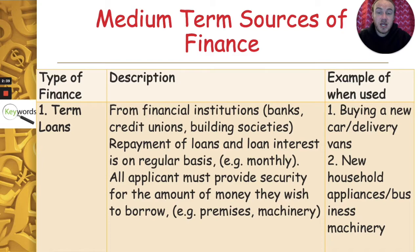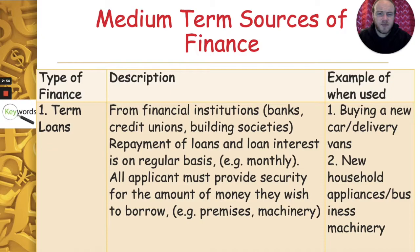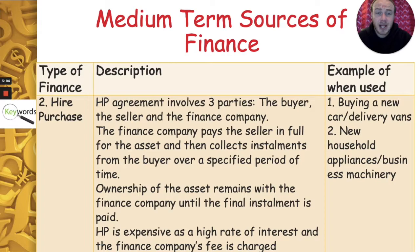The medium-term example is a term loan. For example, a car loan or a home improvement loan. A term loan is a loan for a set period of time, with regular payments — usually monthly — plus interest. A business might get one for new appliances or machinery. Medium-term loans last between one and five years.